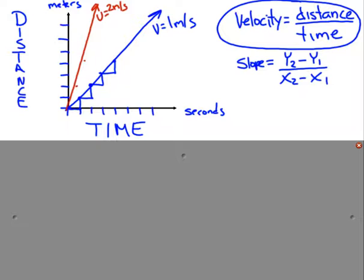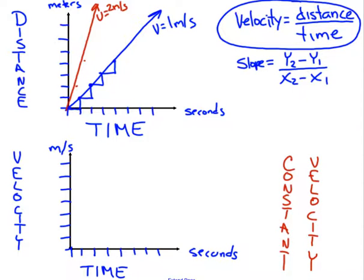Another common type of graph is a graph of velocity versus time. From what we've been talking about, you know that the velocity is constant. So what should the graph look like? Our example was the velocity was 1 meter per second. As long as time kept going by, it was still 1 meter per second.